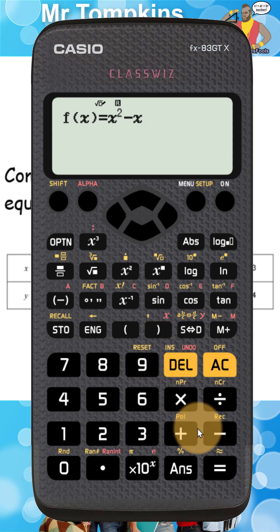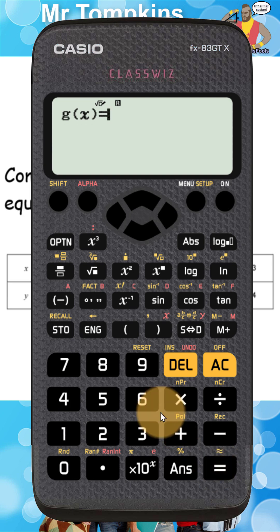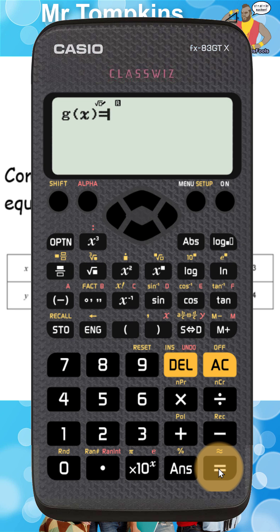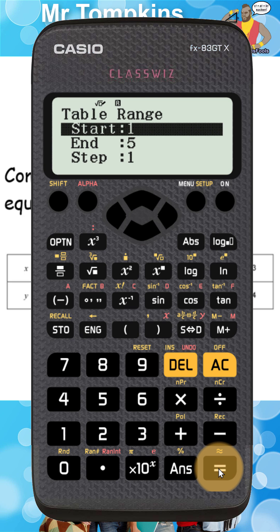When I press the equals button the very newest model will say g of x is equal to. It gives you the opportunity to enter a second function. I don't need that here so I'm just going to press equals again and I get on to the range of values that I need to put in.